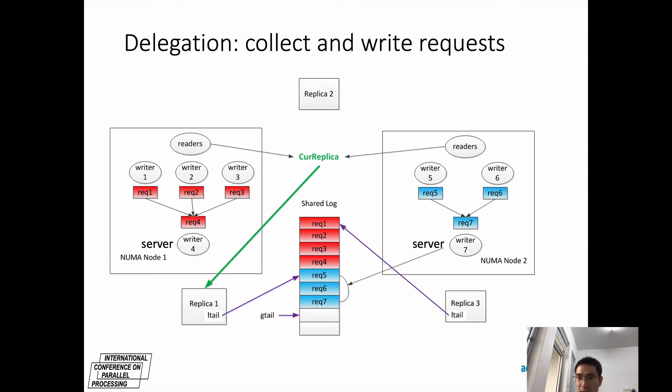For NUMA node 2, it has the same steps as in NUMA node 1. To execute requests, the server collects request 5, request 6, and request 7, and then allocates 3 free entries from the shared log. Finally, it fills the allocated free entries with these requests.